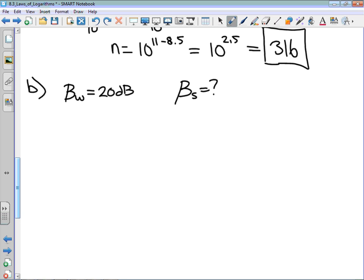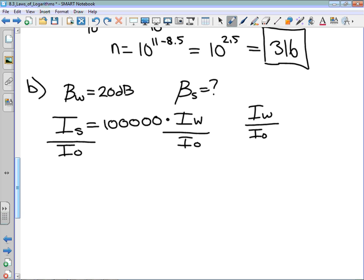It does tell us that the intensity of our safe sound is equal to 100,000 times the intensity of a whisper. Just like my previous question, I am going to divide both sides by I0, because that allows me to relate this to the decibel formula. If the decibel reading of a whisper is 20, then the intensity of a whisper divided by I0 is going to be 10 to the power of 20 divided by 10. The intensity of the whisper compared to the base intensity is 10 squared. It's 100 times more intense than the softest sound we could ever hear.